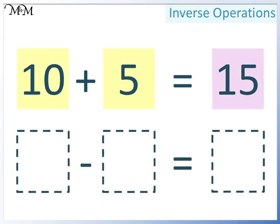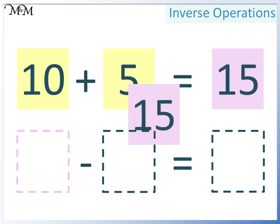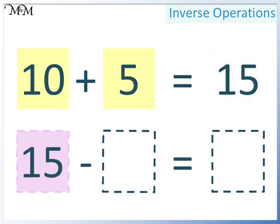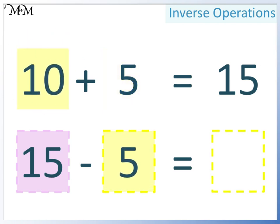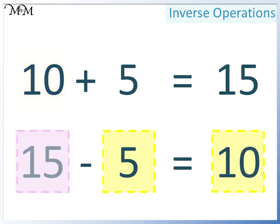Let's look at another way that we could write this as a subtraction. Again, for a subtraction, we must have the largest number at the start. The largest number is 15. In the next space, we can have either of the two smaller numbers. This time, we'll have 5. In the final space, we'll have 10. 15 take away 5 equals 10.